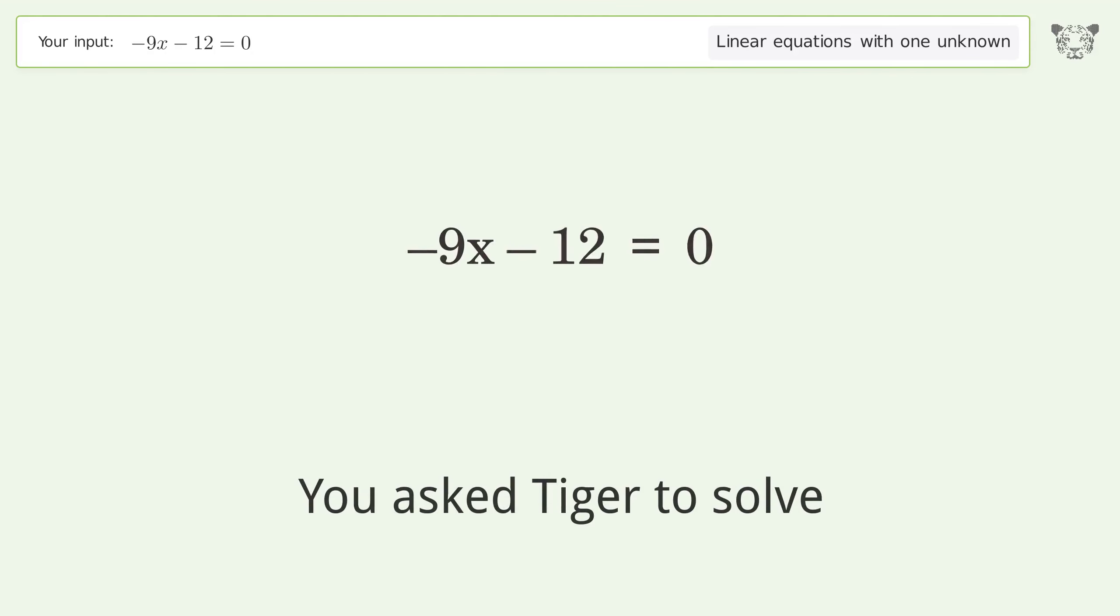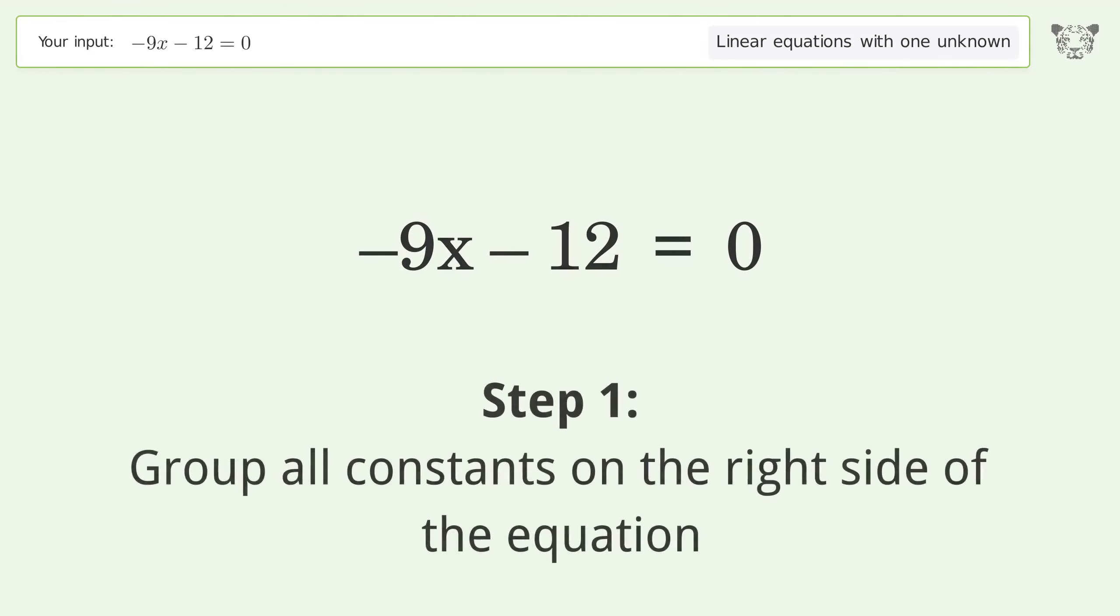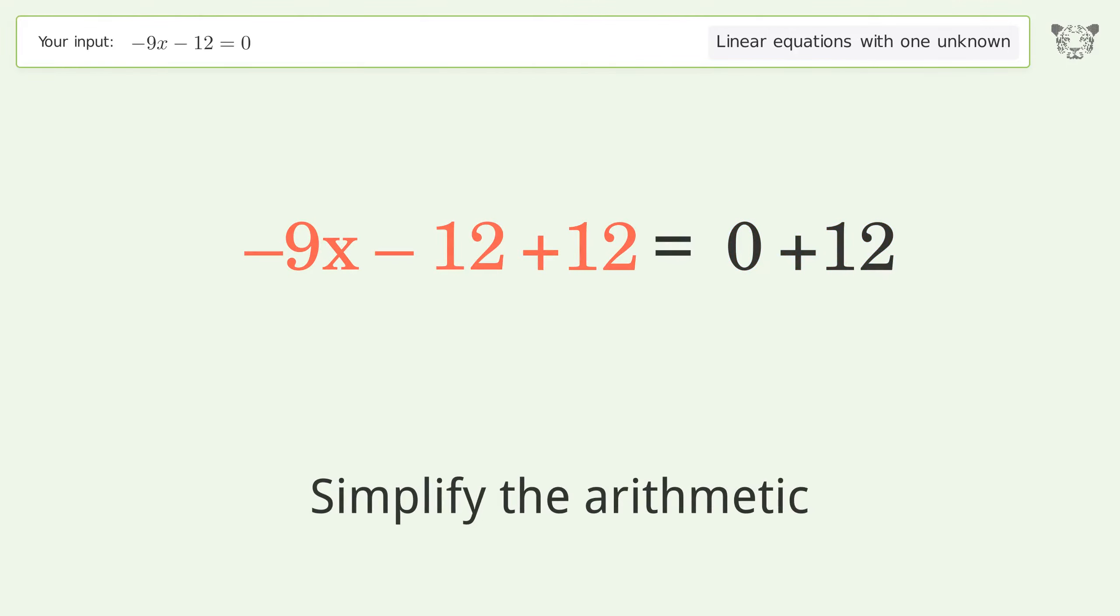You asked Tiger to solve this. It deals with linear equations with one unknown. The final result is x equals negative 4 over 3. Let's solve it step by step. Group all constants on the right side of the equation. Add 12 to both sides. Simplify the arithmetic.